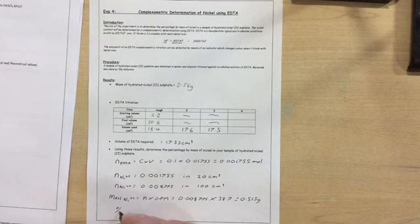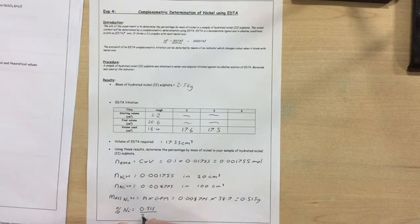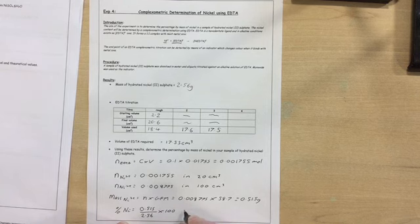So the percentage of nickel: out of that 2.56 grams, 0.515 was nickel. So 0.515 divided by 2.56 times 100 gives a percentage of 20.1 percent.